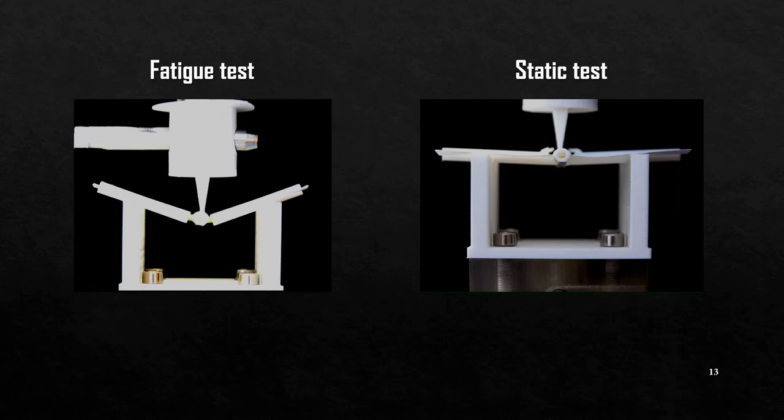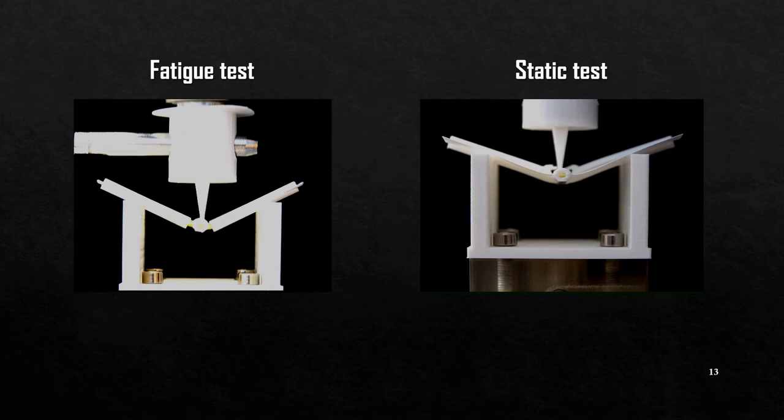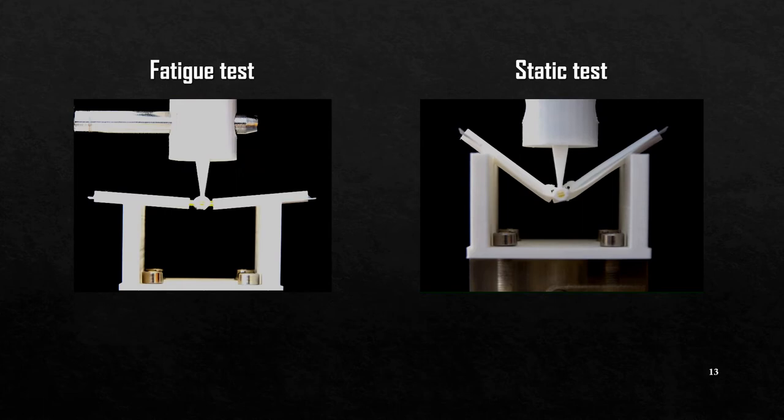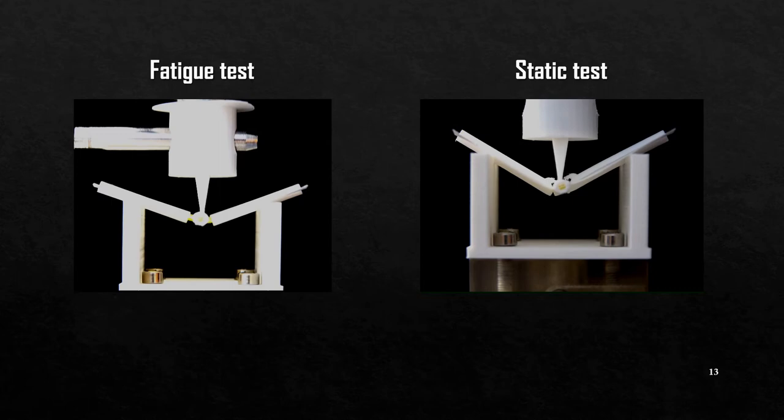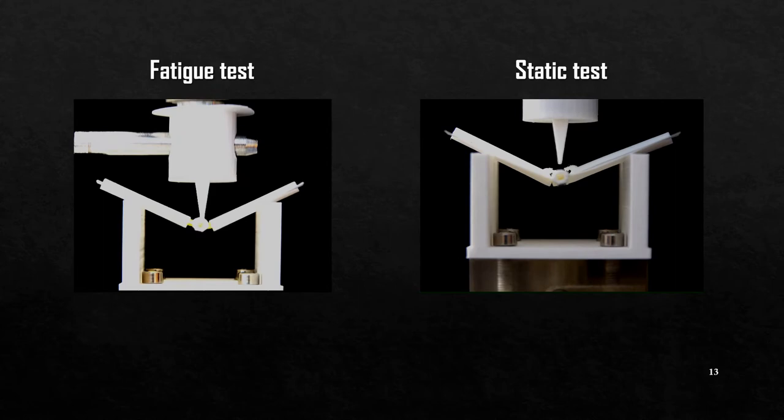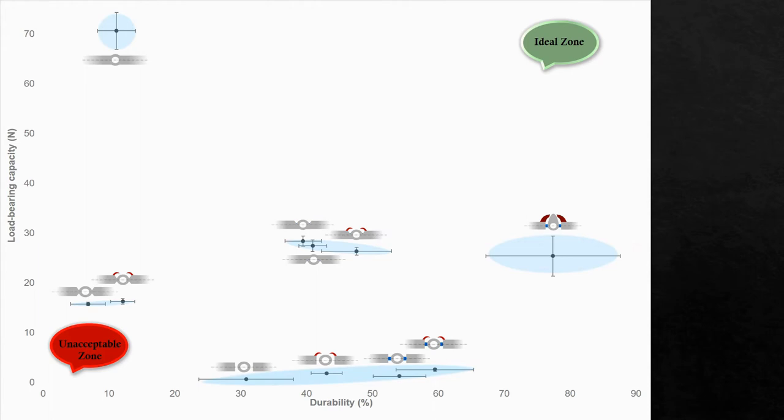The same setup as in static tests was used in fatigue tests as well. Here, the joints were subjected to a displacement for 1000 loading cycles at a frequency of 1 Hz. The force required for the displacement was recorded throughout the test and the difference between the forces in the first and last loading cycles was used as a measure of durability.